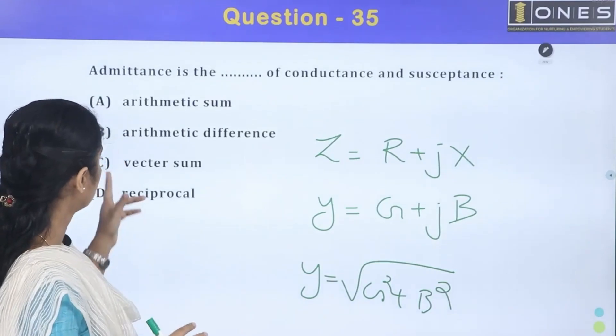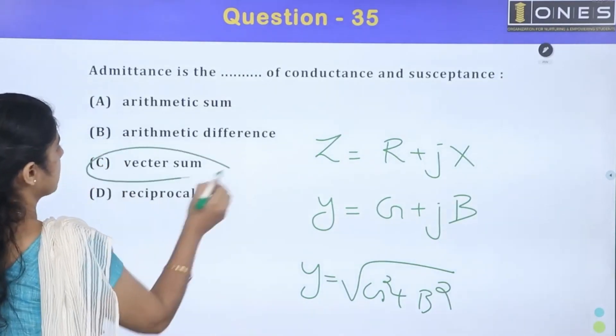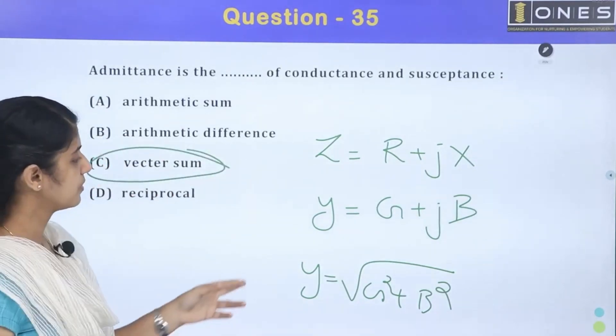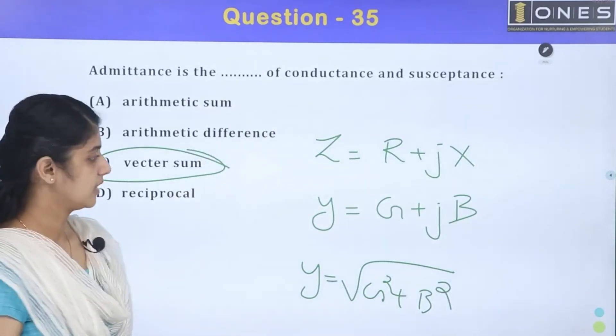Admittance is the sum of conductance. Now the answer is vector sum. Vector sum of conductance and susceptance.